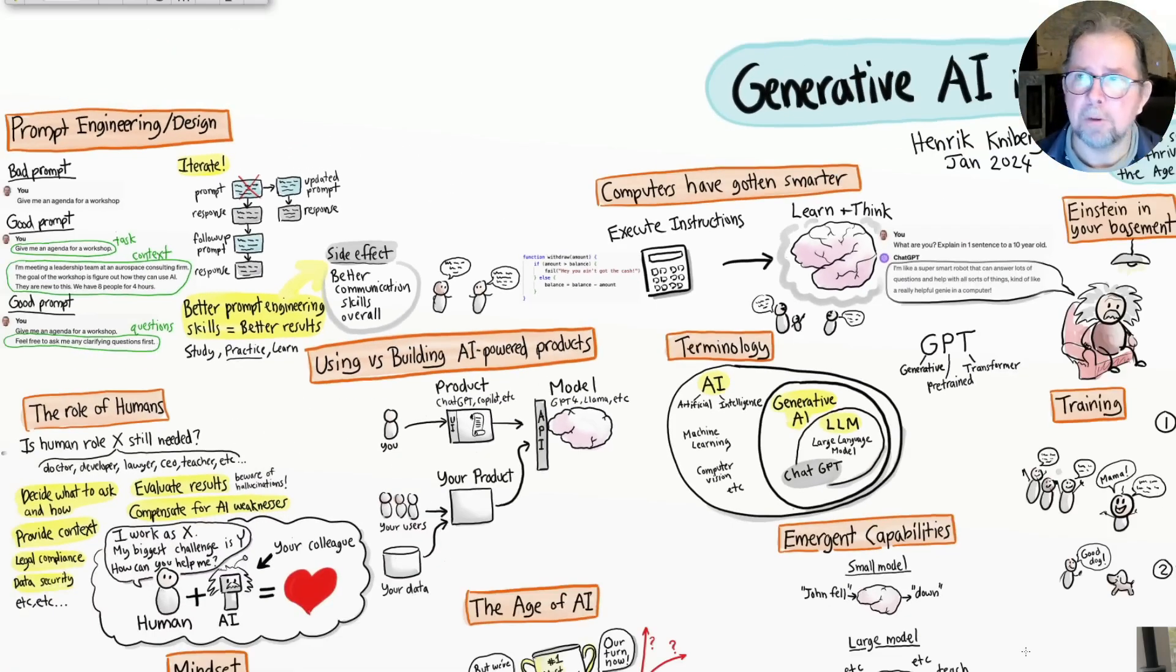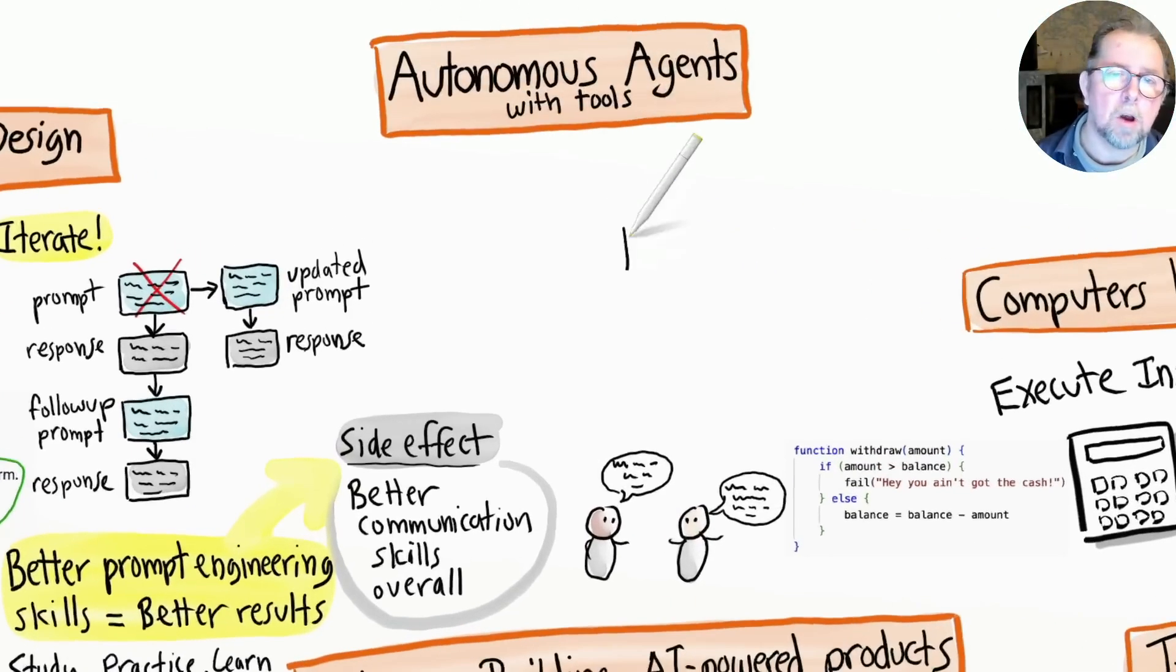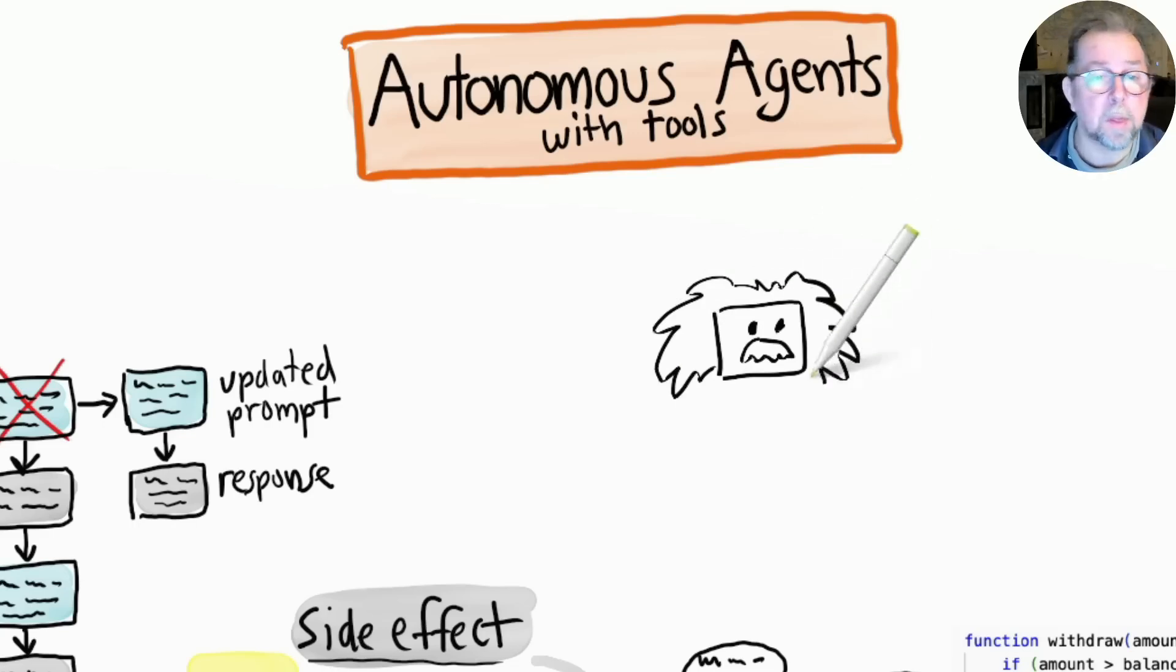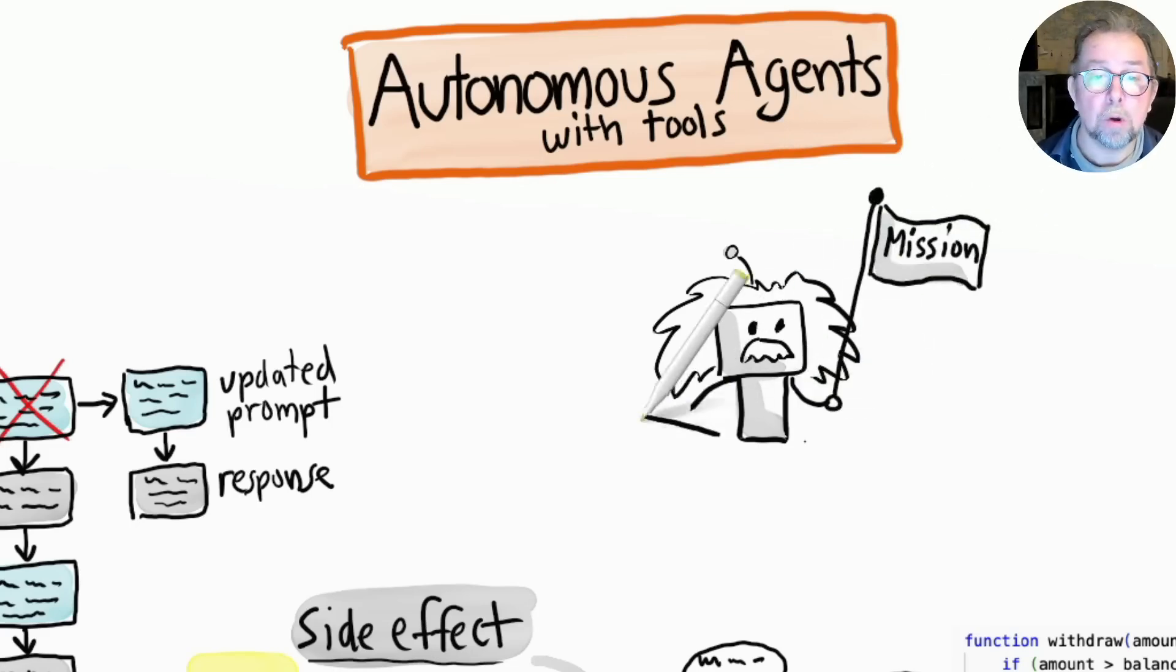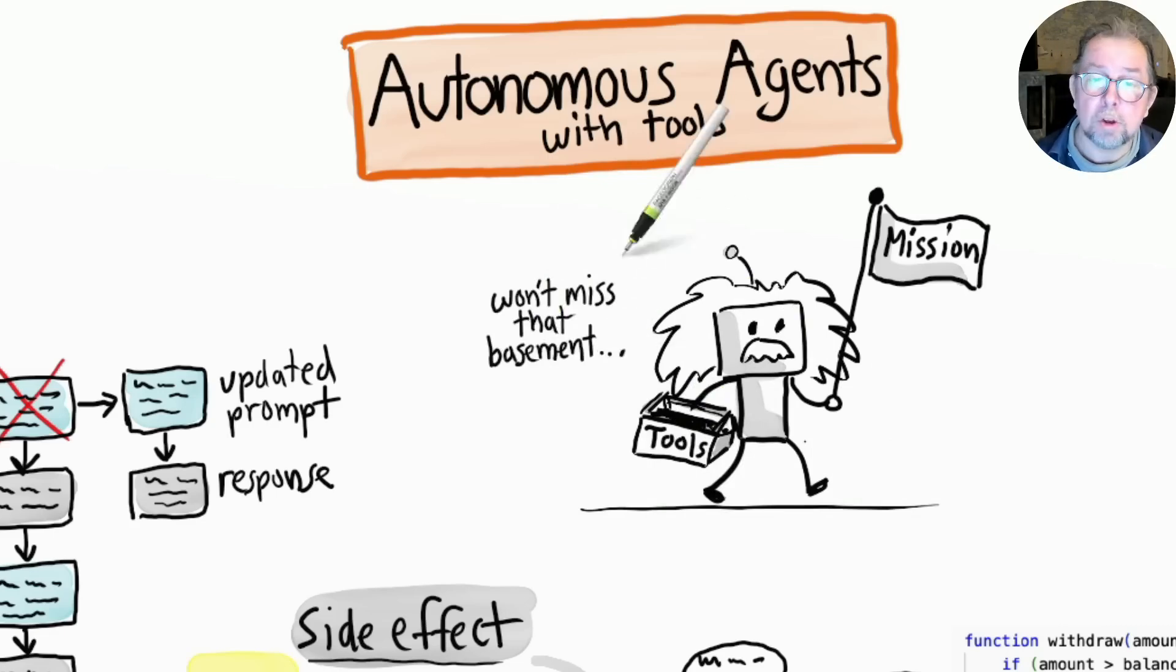I think the next frontier for generative AI is autonomous agents with tools. These are AI-powered software entities that run on their own, rather than just sitting around waiting for you to prompt them all the time. So you go down to Einstein in your basement and do what a good leader would do for a team: you give him a high-level mission and the tools needed to accomplish it, and then open the door and let him out to run his own show without micromanagement.